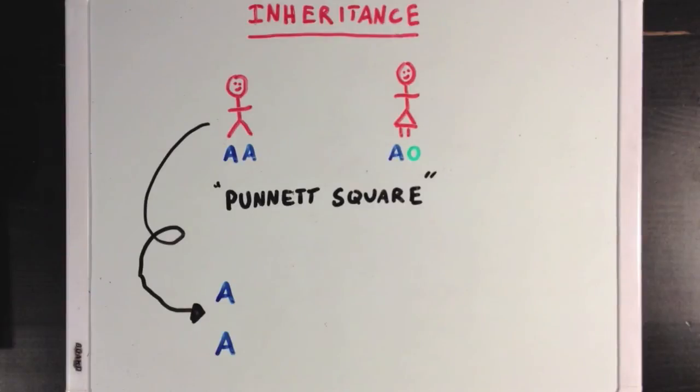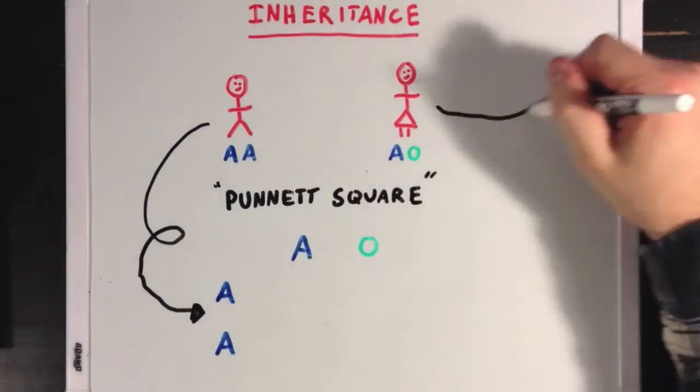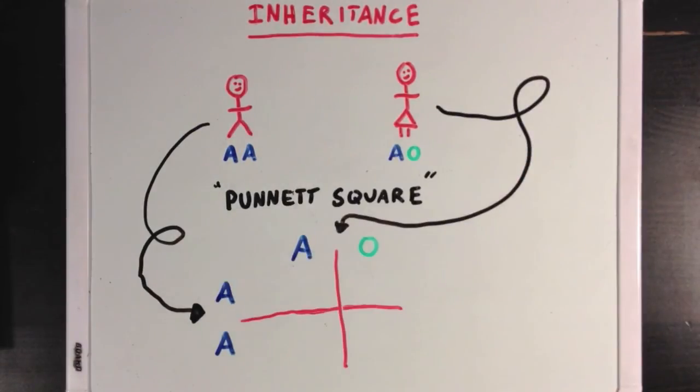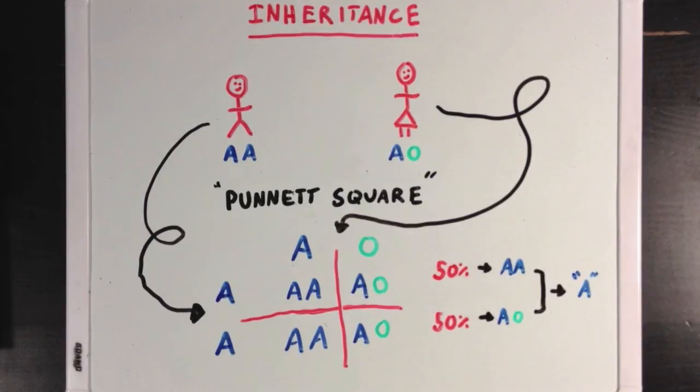So if we take the father's alleles and line them up vertically, and then take the mother's alleles and line them up horizontally, we can fill in the chart to find the possible genotypes for our offspring. In this case, two of our boxes will have AA in them, and two will have AO in them. So that means that half of the children will have the genotype AA, and half of the children will have genotype AO. But since both of these genotypes code for the same phenotype, all of the children will have the blood type A phenotype.